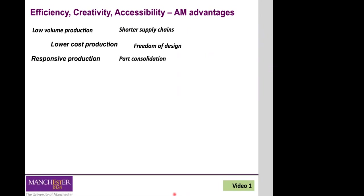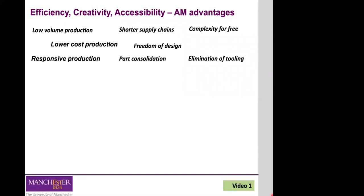Part consolidation is another advantage — additive manufacturing allows you to reduce assembly requirements by consolidating parts into a single component. Even complete assemblies with moving parts can be built. In conventional manufacturing you often fabricate parts separately and then assemble them. With additive manufacturing, increased geometric complexity doesn't add any additional costs, which is not the case in conventional manufacturing.